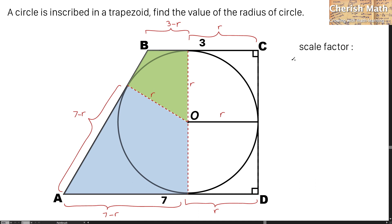7 minus R divided by R is the initial scale factor that I produced from the measurement of the diagram, and that is equal to a scale factor by using R divided by 3 minus R, because the radius R and the 3 minus R are similar to each other for the sides.